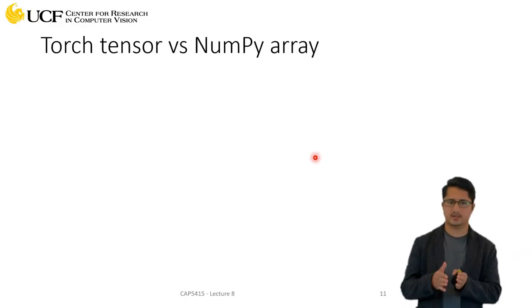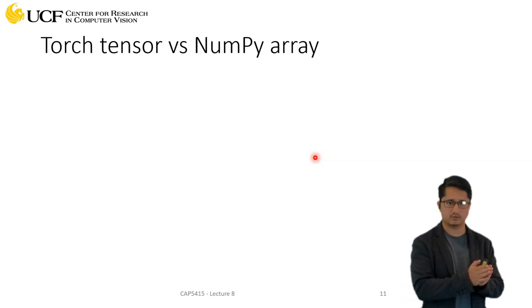All right, so now let's try to compare torch tensors versus NumPy arrays. So far you have seen that whatever you can do with NumPy arrays you can do with torch tensors, so that's more or less true.